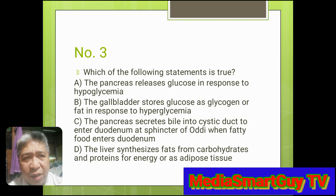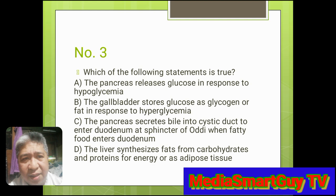Number 3. Which of the following statements is true? A. The pancreas releases glucose in response to hypoglycemia. B. The gallbladder stores glucose as glycogen or fat in response to hyperglycemia. C. The pancreas secretes bile into the cystic duct to enter the duodenum at the sphincter of Oddi when fatty food enters the duodenum. D. The liver synthesizes fats from carbohydrates and proteins for energy or as adipose tissue. Answer: D. The liver synthesizes fats from carbohydrates and proteins for energy or as adipose tissue.